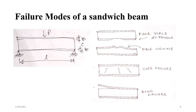Now, the different failure modes of a sandwich beam. We consider a sandwich beam where T is the face thickness, C is the core thickness, and L is the length. A load P is applied in the middle and the beam is simply supported.